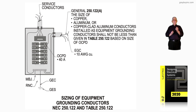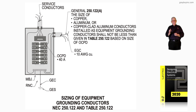The grounding conductor — the main bonding jumper — would be sized per Table 250.102C1. That's a good illustration of supply-side grounding and load-side grounding, and that's what figure 16-113A is illustrating.